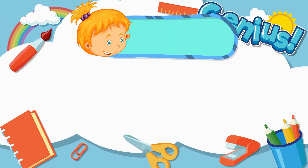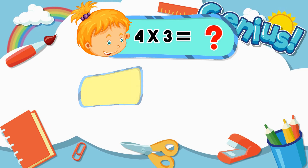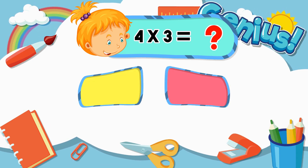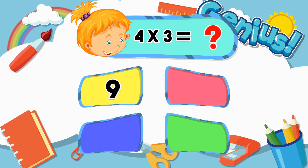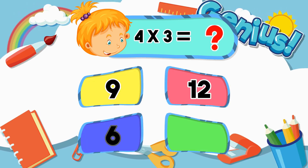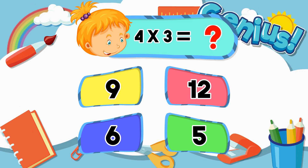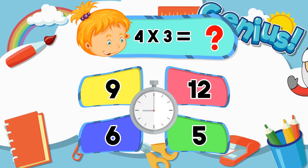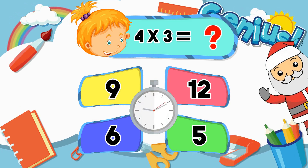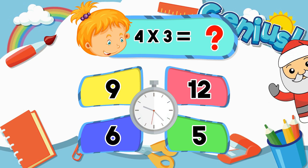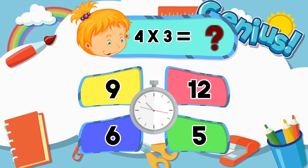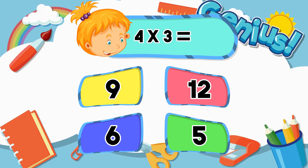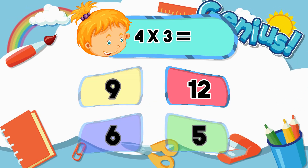What is 4 times 3? 9, 12, 6, 5. The correct answer is 12.